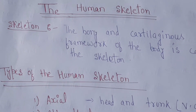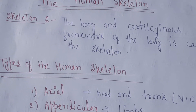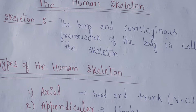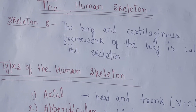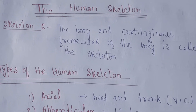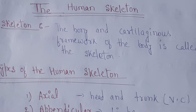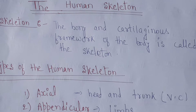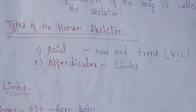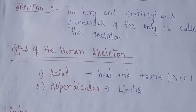What is the human skeleton? The human skeleton means 'kankal.' The bone and cartilage framework of the body is called a skeleton. A skeletal system is necessary to support the body, protect internal organs, and allow for the movement of an organism.